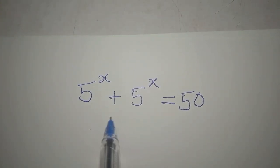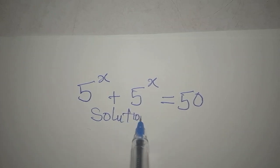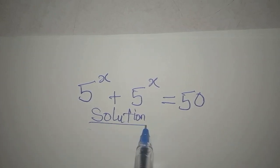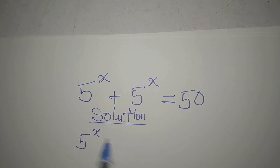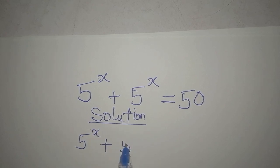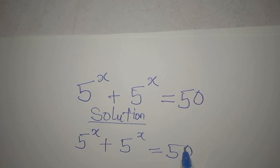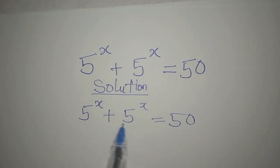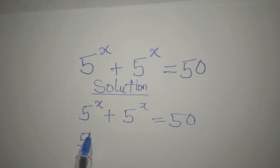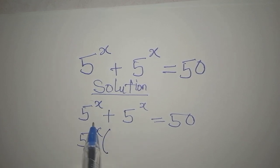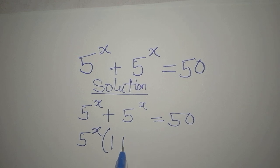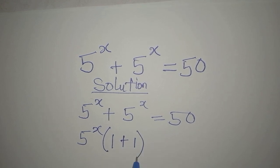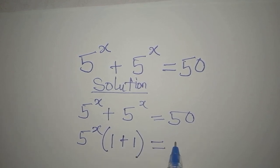Hello everyone, let's provide the solution to this problem: 5 to the power of x plus 5 to the power of x equals 50. The first step is to apply factorization. 5 to the power of x is common here, so we're going to have 1 plus 1, and this equals 50.